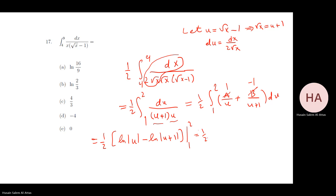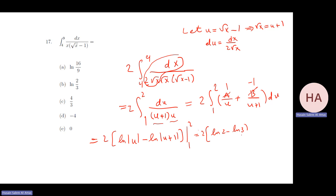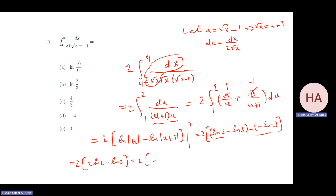Evaluating from 1 to 2 (in u): at u = 2: ln2 - ln3; at u = 1: ln1 - ln2 = 0 - ln2 = -ln2. So: (ln2 - ln3) - (-ln2) = 2·ln2 - ln3 = ln4 - ln3 = ln(4/3), and applying the half: ½·ln(16/9), which is this answer.